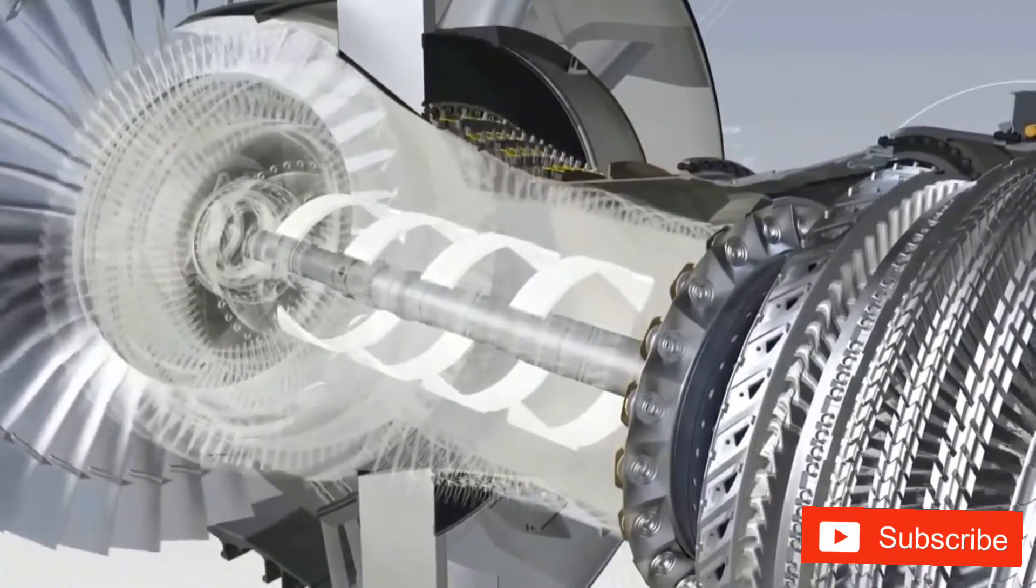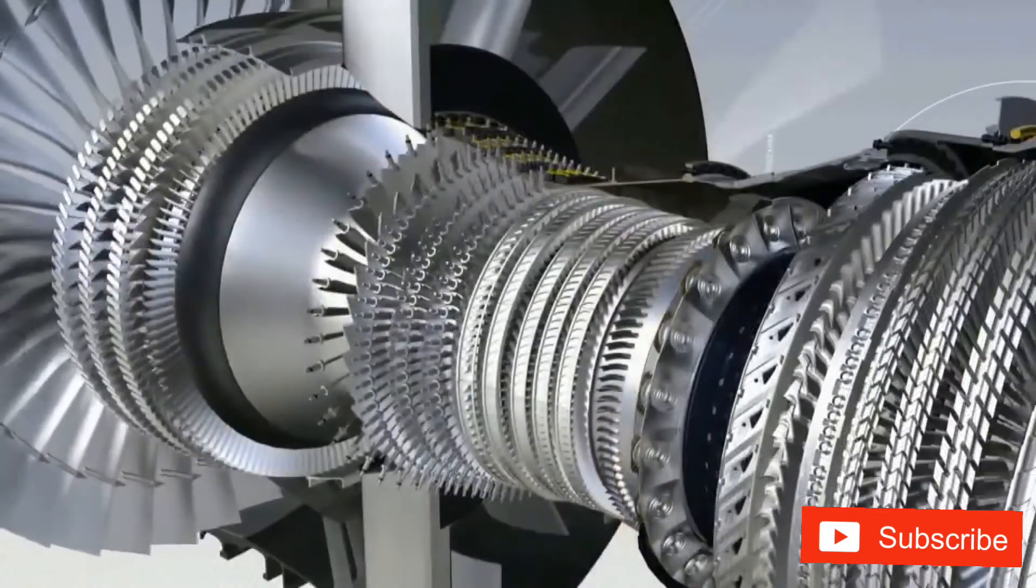The air is then expelled through the primary duct, joining the air from the fan stream.